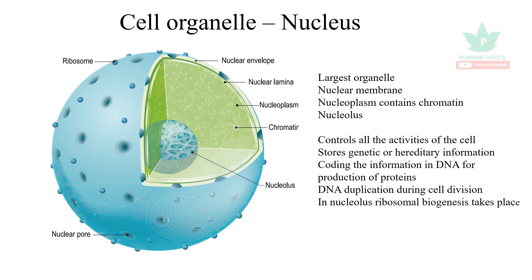The nucleus is a very important organelle — it is the largest organelle. It has a nuclear membrane, a nucleolus, and chromatin. It controls genetic information and is concerned with mitosis and meiosis. DNA duplication also occurs because of the nucleus.